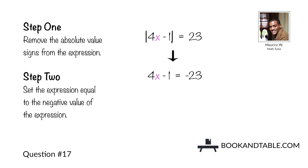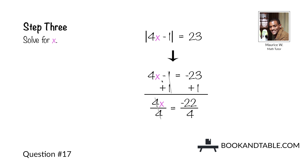Remove the absolute value signs, leaving you with 4x minus 1 on the left side. Step two: solve for the negative value, which would be negative 23. Negate negative 1 by adding 1 to both sides, giving 4x is equal to negative 23 plus 1, which is negative 22. Remove the coefficient 4 by dividing both sides by 4, leaving x is equal to negative 22 over 4, which simplifies to negative 11/2.